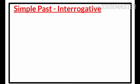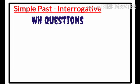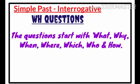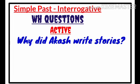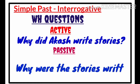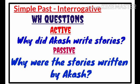In interrogative sentences we also come across WH questions — questions that start with which, what, where, when, how, who. For example: 'Why did Akash write stories?' When we change to passive voice, we keep the same question word: 'Why were the stories written by Akash?' If it is singular: 'Why was a story written by Akash?'